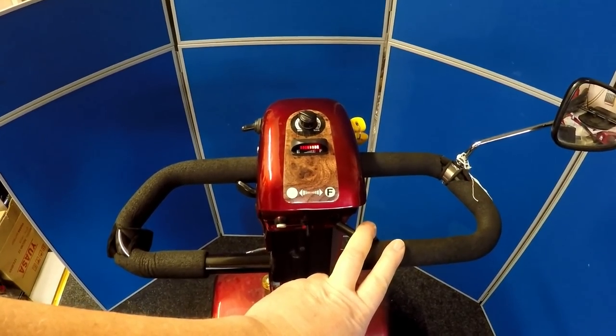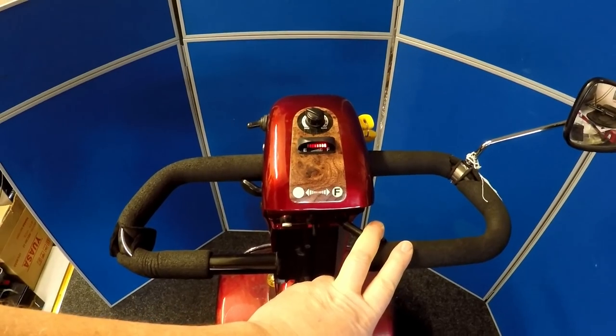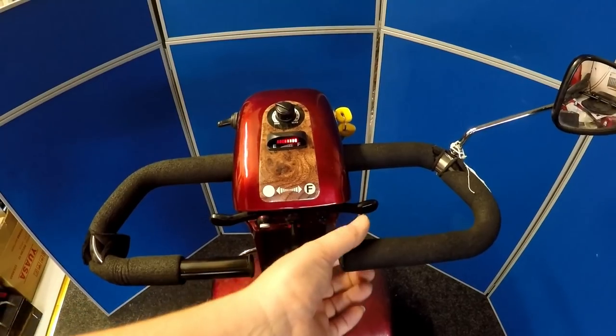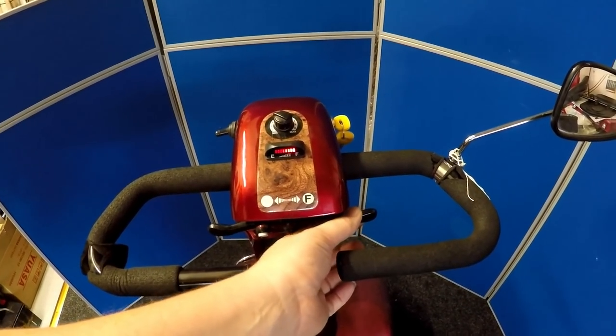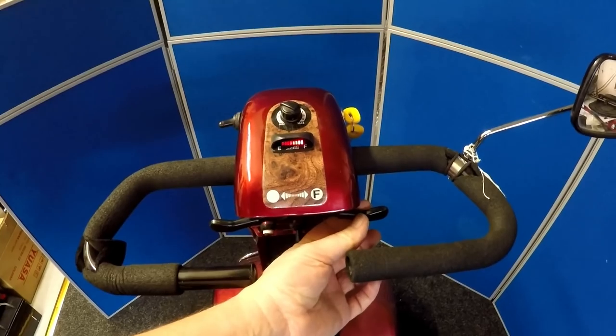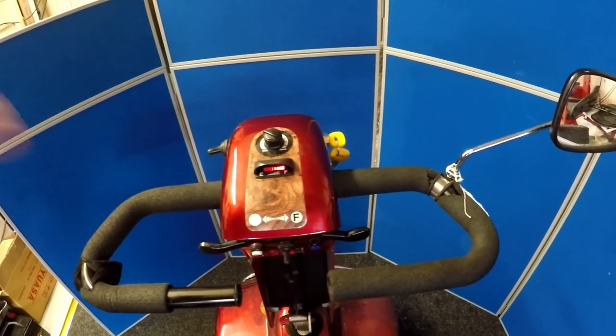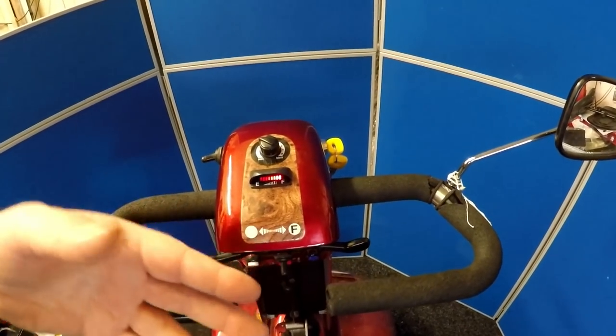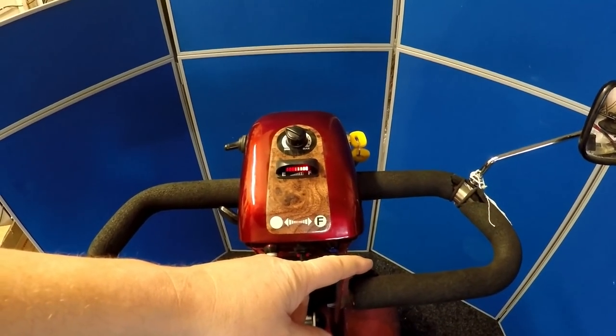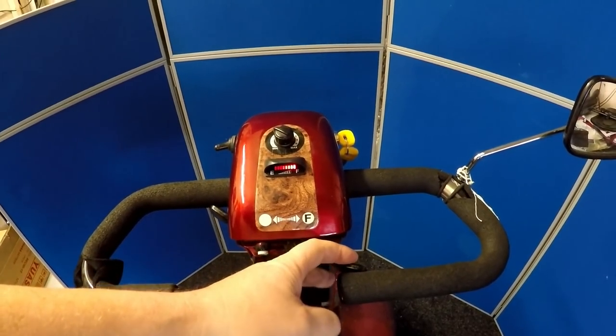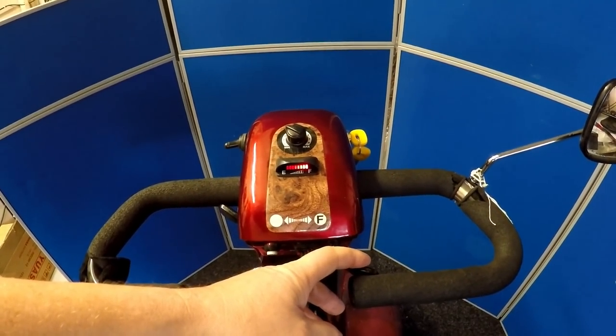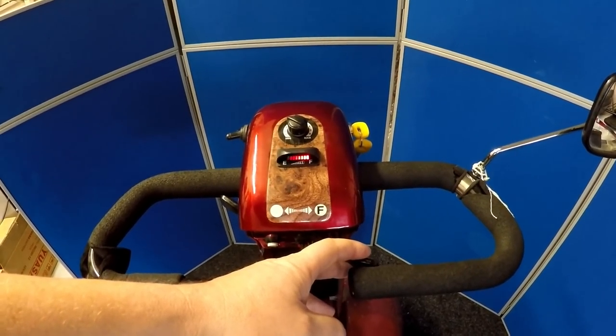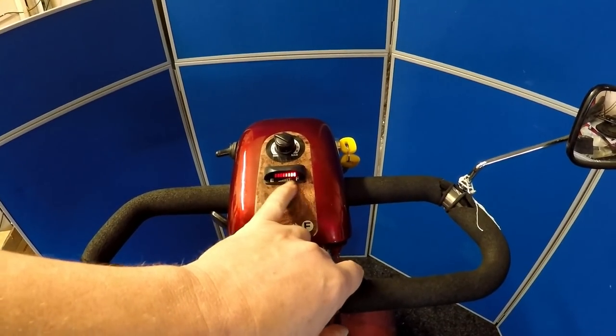It slows down again, so a few things you would check with this particular problem is the play in the throttle pod - not this play, the up and down play. When you get the up and down play here, it could be a possibility that the pot is worn, especially when the speed is going slow, fast, slow, fast when you press this particular lever all the way. So he's driving along, the scooter slows down and he's not doing anything.